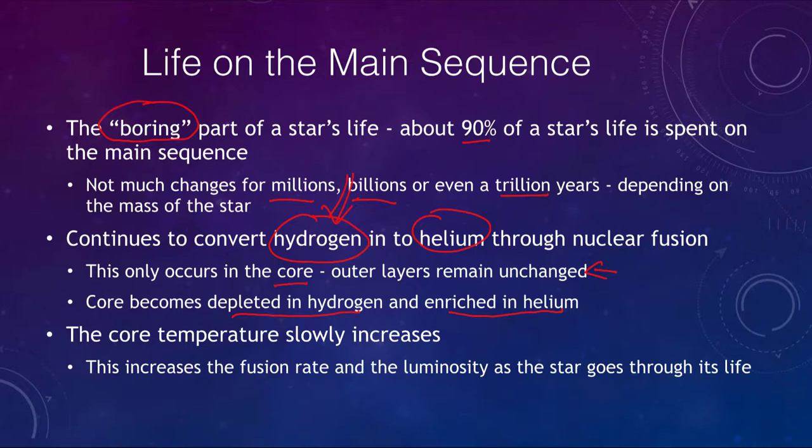It will change the core in that this core temperature will slowly increase over this time. For something like the sun, this would be 10 billion years. Over those 10 billion years, we would see this core temperature of the sun slowly increasing, which will increase the rate of fusion and slowly the luminosity. But it is a very slow change, not something that occurs rapidly at all.